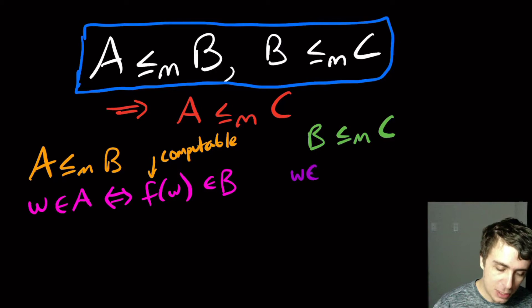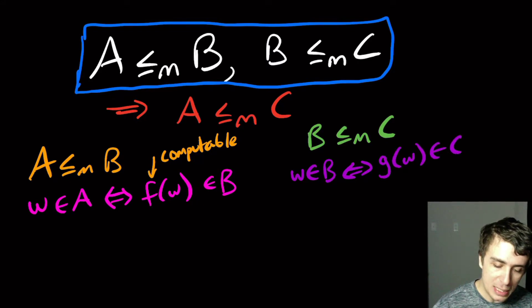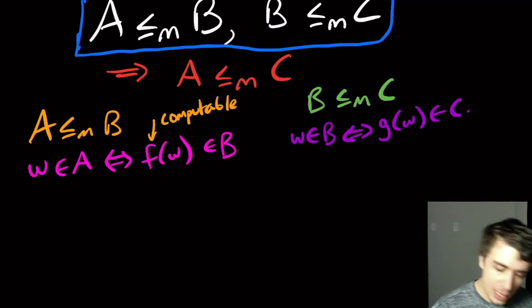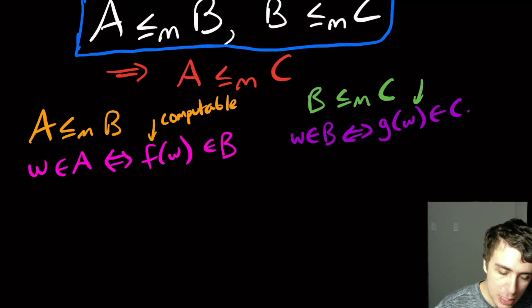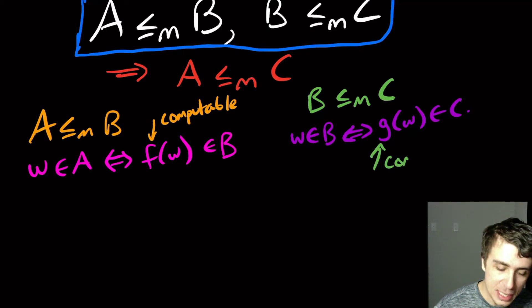So if we have some W in B, that's true if and only if G of W is in C. And as we just noted here, the G function, I should point at G instead, this thing is computable.